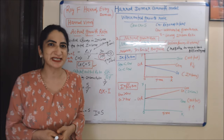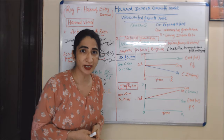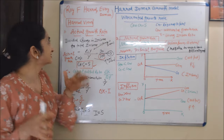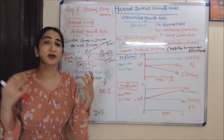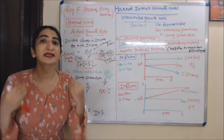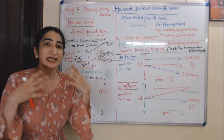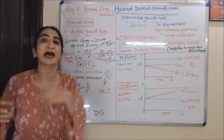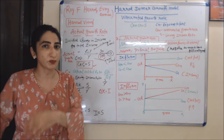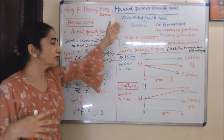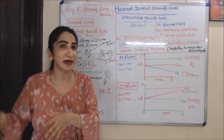Hello students, my name is Mini Seti. Today we are going to learn about the Harrod-Domar growth model. This model is given by Roy F. Harrod and E.F. Domar. This model is called the classical Keynesian model of economic growth because it is based on Keynesian investment and saving analysis.